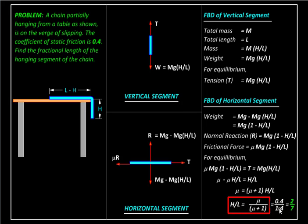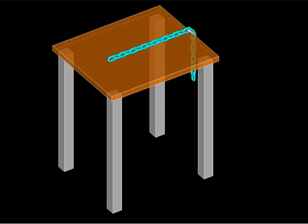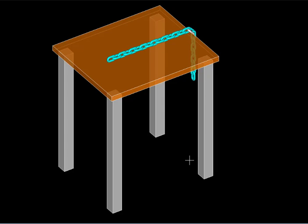Rearranging, we get H/L = μ/(μ + 1). Substituting μ = 0.4, we get H/L = 0.4/1.4, which reduces to 2/7. So 2/7 of the chain's length can hang down before it slips — anything fractionally more than that and the chain will start sliding down.